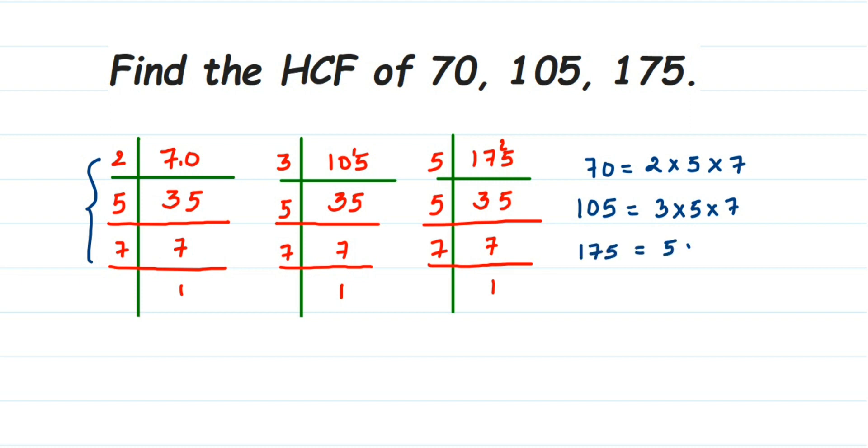Once we have written the factors, to find the HCF we have to check the prime factors which are present in all three. If you see here, 5 is present in all three, and 7 is present in all three. The factor 5 is present in 70, 105, and 175. Similarly, 7. But for the second 5 in 175, I don't have a common factor in 70 and 105. Similarly for 3, it's not present in the other two numbers.